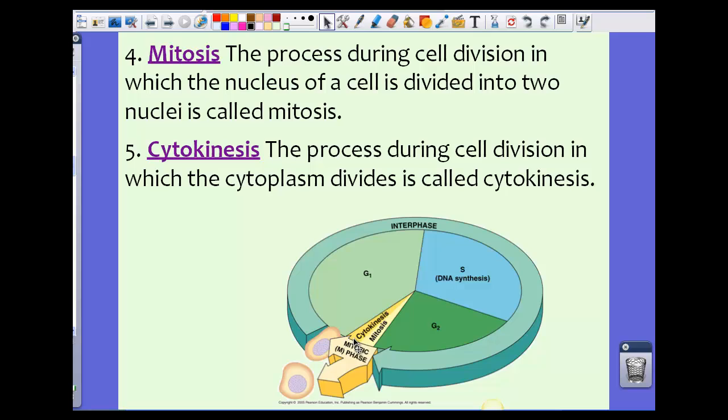In cytokinesis, this is the fifth stage. This is the process during cell division in which the cytoplasm divides. So cytokinesis, again, very tiny. Now both mitosis and cytokinesis are put together in something called the mitotic phase.